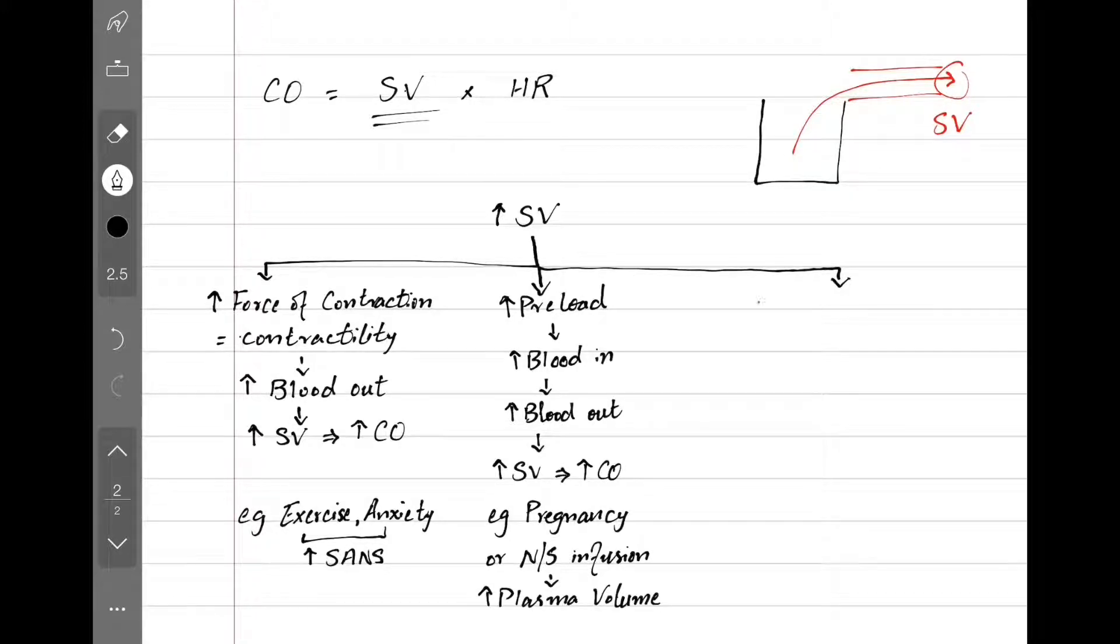Third way we can get more blood out is by reducing the afterload, which means less resistance. Heart has easier time pumping out more blood. More blood out means increased stroke volume and cardiac output. We can decrease afterload by dilating the arteries using a drug such as hydralazine.